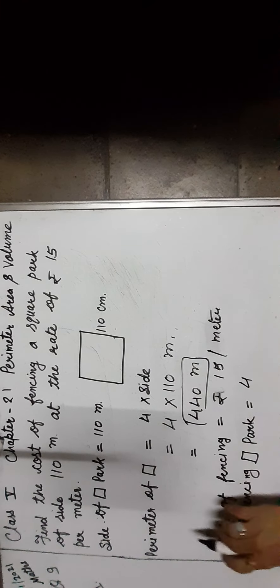The given rate of fencing is rupees 15 per meter. To find out the cost of fencing the square park, multiply the perimeter by 15. So 440 multiplied by 15 is equal to rupees 6,600. Thus, the cost of fencing the square park is rupees 6,600.